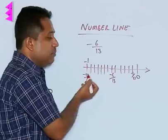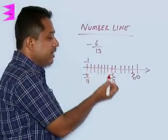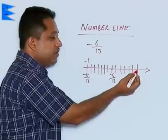So, in this case it was minus 6 by 13. So, we have divided into 13 portions and we see the numerator, that is 6.